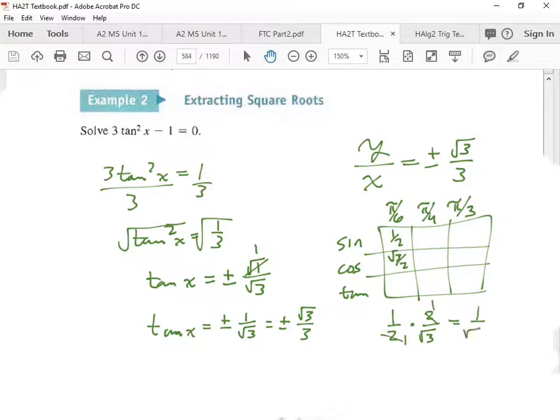So any angle that has π/6 as its reference angle will give you either positive √3/3 or negative √3/3. Let's check out our unit circle now. We know this one would work—this is π/6.